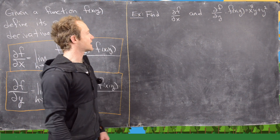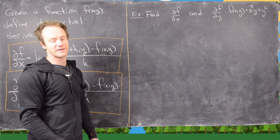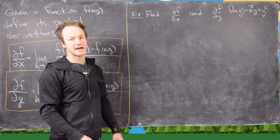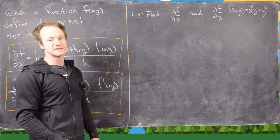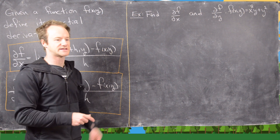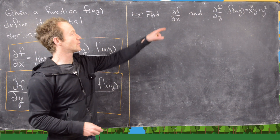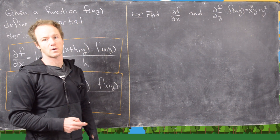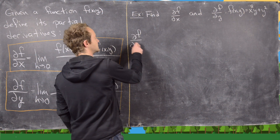So let's look at an example. Let's find the partial of f with respect to x and y where we have this polynomial function, and we'll use the definition of the partial derivative, and then we'll see there's a quick trick to do this very easily. Here we'll take this function to be x squared y plus y squared. So let's find df/dx first.